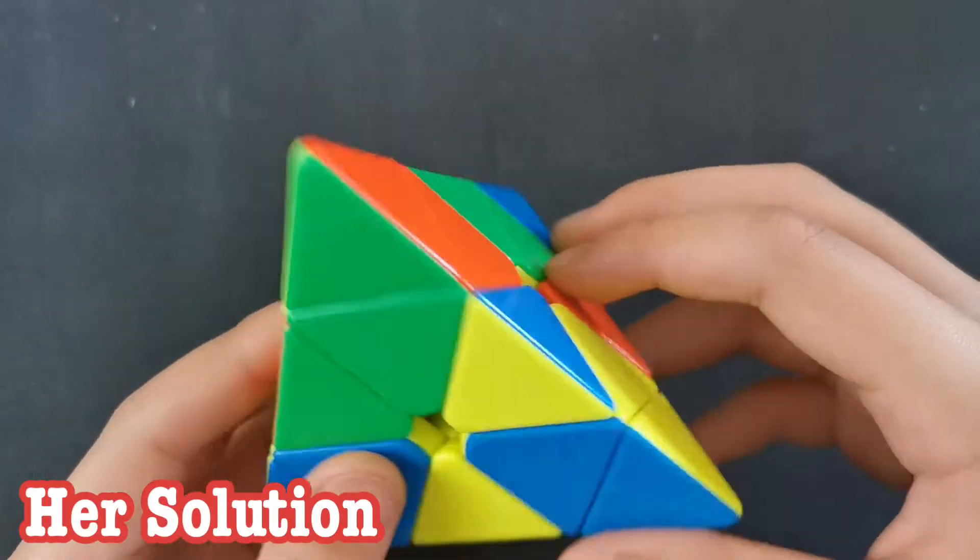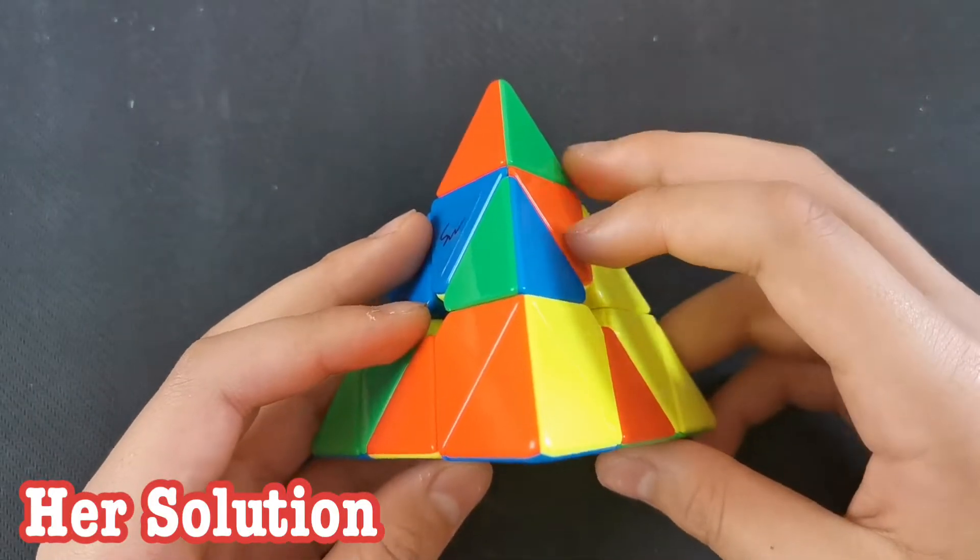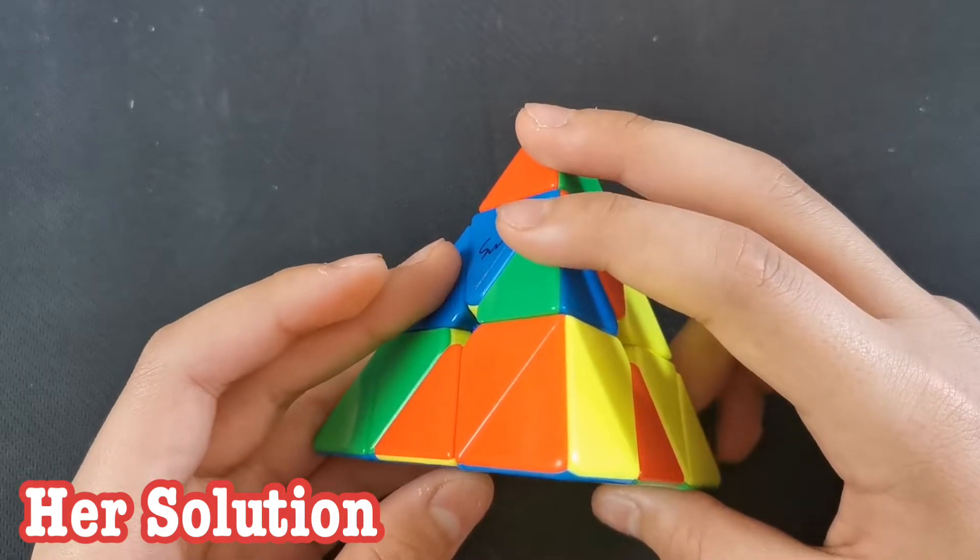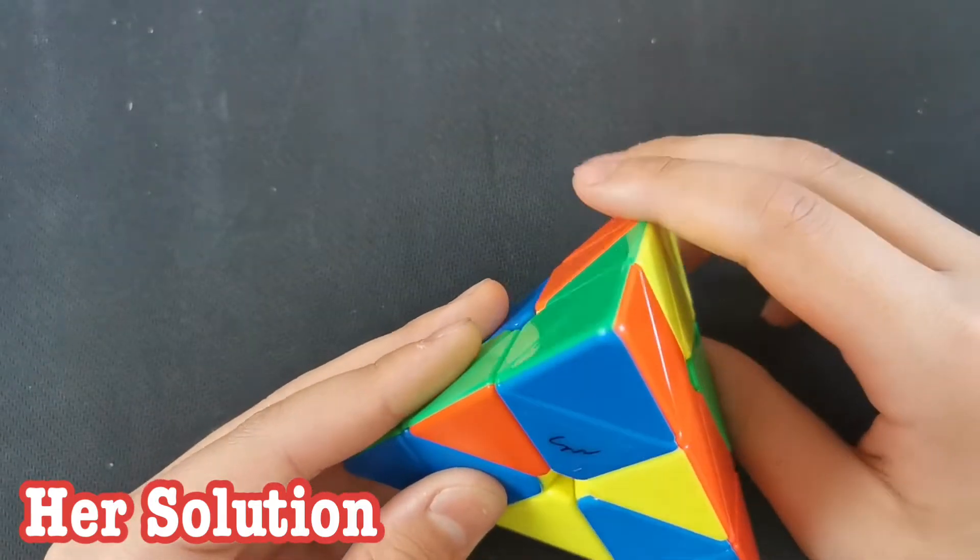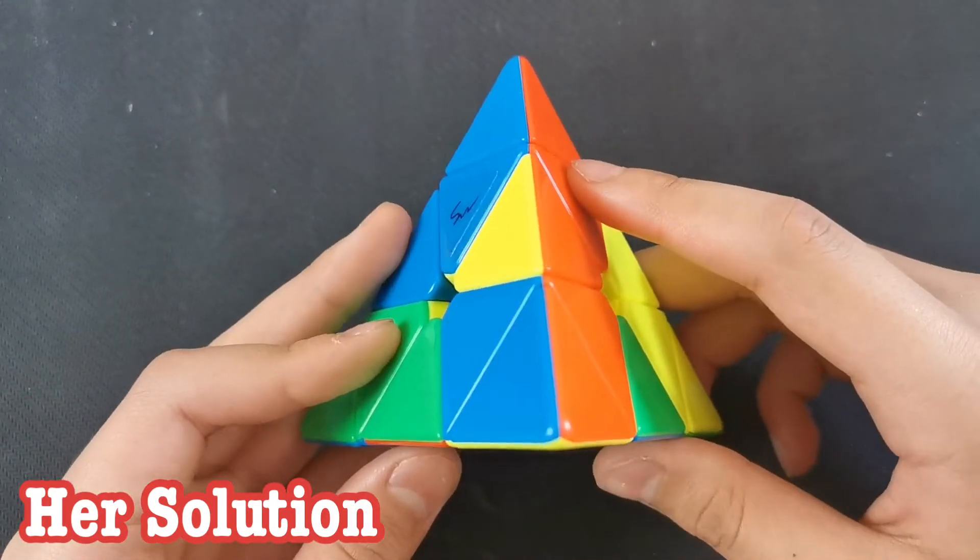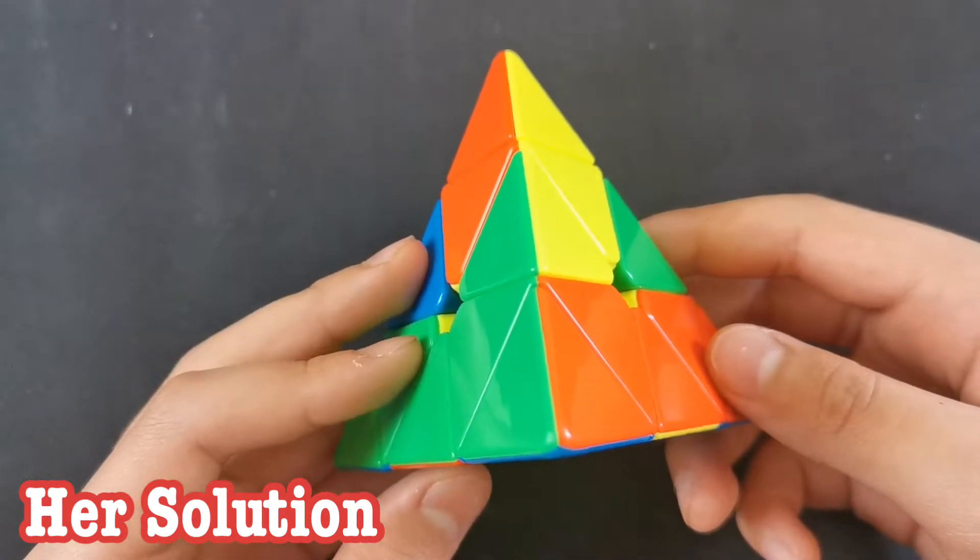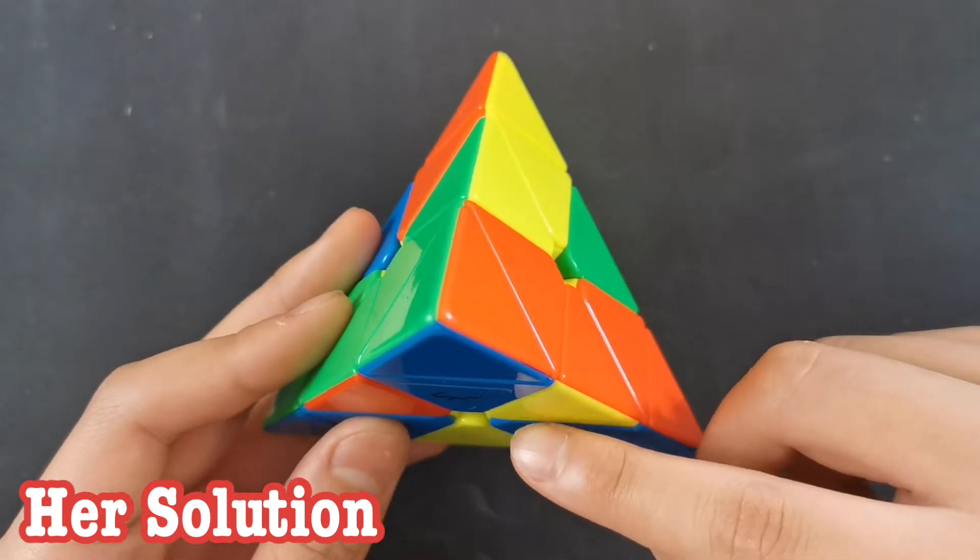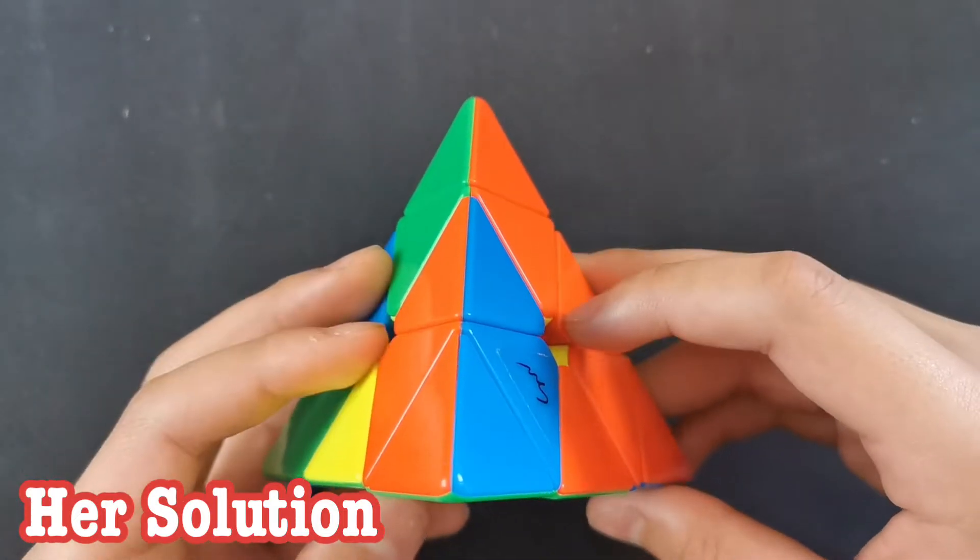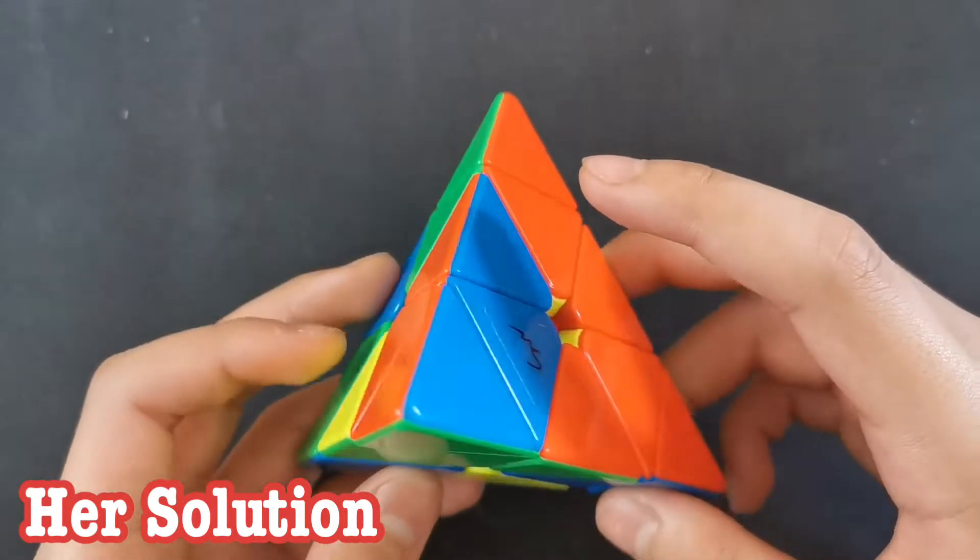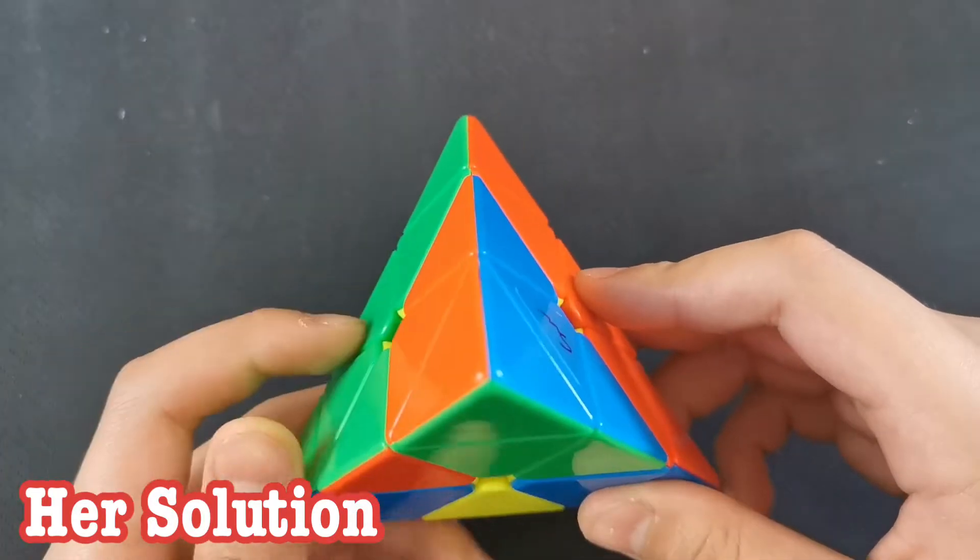So what she did here was she did the yellow V and she held it like this. She went like this, did a U and a back tip and then kind of did like an L to make the blue facing the front, but I think she did something like that, I'm not sure. And then she kind of rotated here. And then she put this edge and matched it with the center before putting it in. Yeah, and then she put this one into the back, preserving this block with U, L, U' and L'.